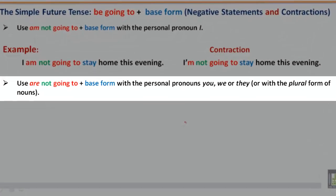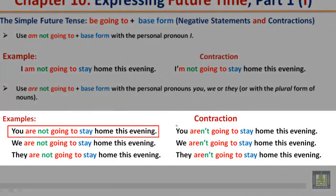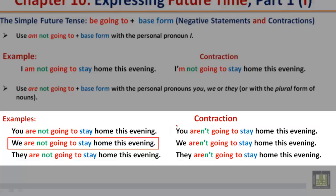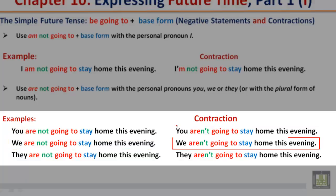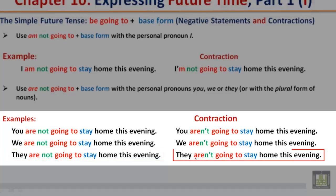Use are not going to plus the base form with the personal pronouns you, we, or they, or with the plural form of nouns. Examples: You are not going to stay home this evening. Contraction: You aren't going to stay home this evening. We are not going to stay home this evening. Contraction: We aren't going to stay home this evening. They are not going to stay home this evening. Contraction: They aren't going to stay home this evening.